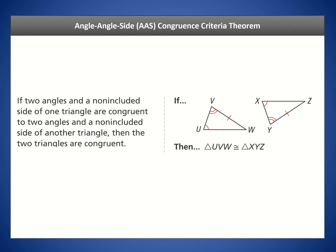Let's formalize the angle-angle-side congruence criteria theorem. If two angles and a non-included side of one triangle are congruent to two angles and a non-included side of another triangle, then the two triangles are congruent. We have two angles and a side corresponding to another set of two angles and a side — that's AAS — and therefore the two triangles are congruent.